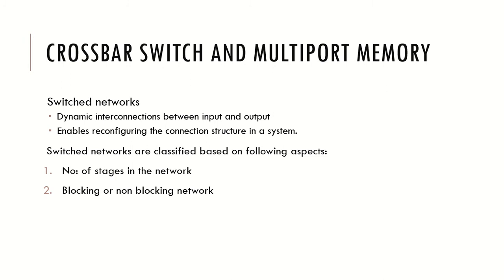Networks are classified based on various factors. The first factor is how many stages of switching elements are there in the network — based on that, there will be single-stage and multi-stage networks. The second factor is whether there is a blocking mechanism inside the network. If there is, it is known as a blocked network; otherwise it is a non-blocking network.